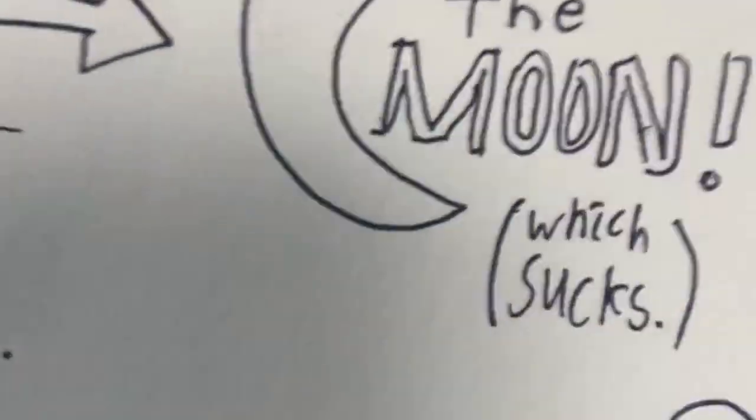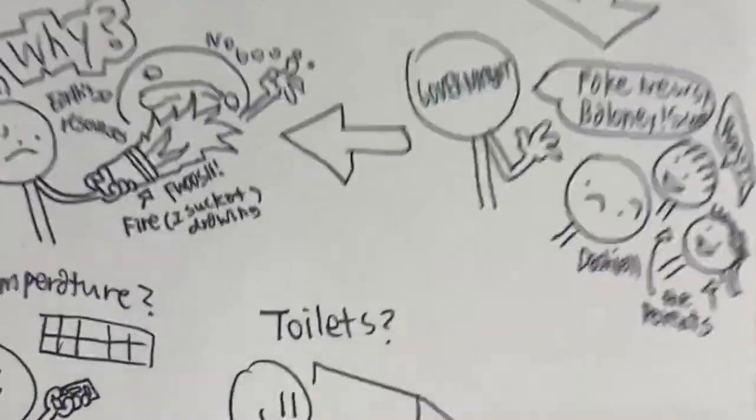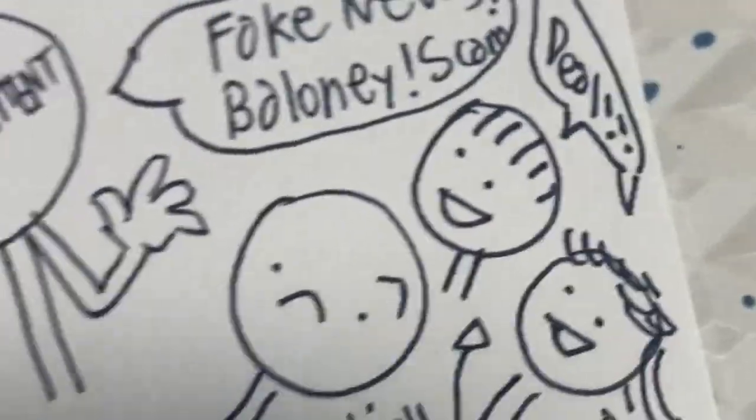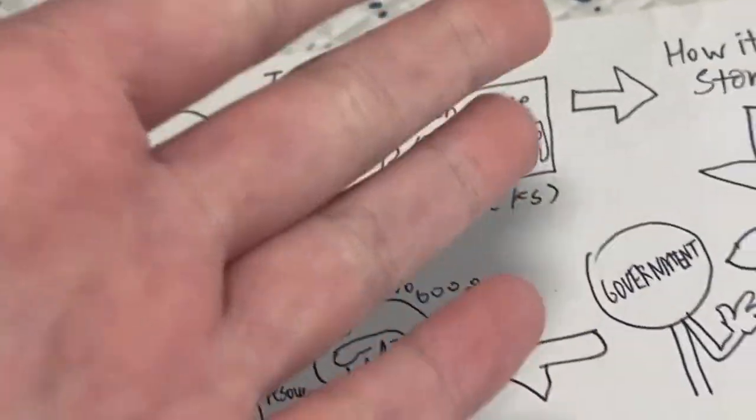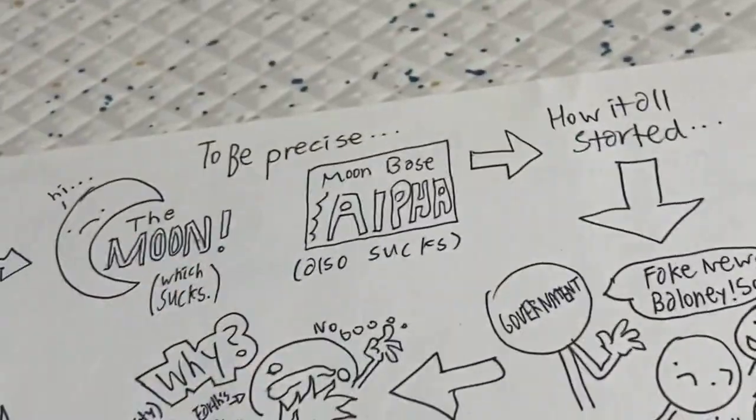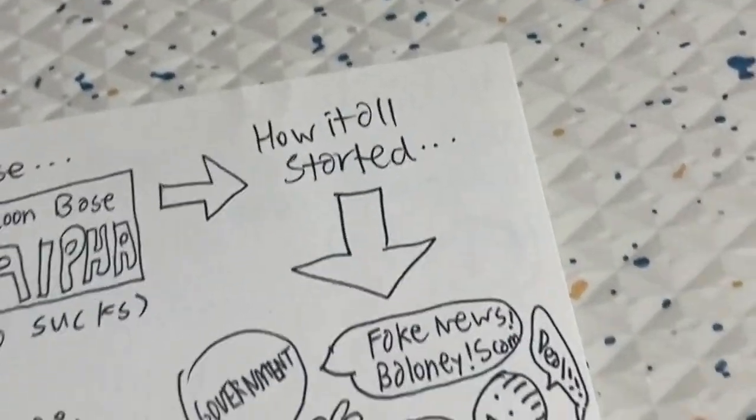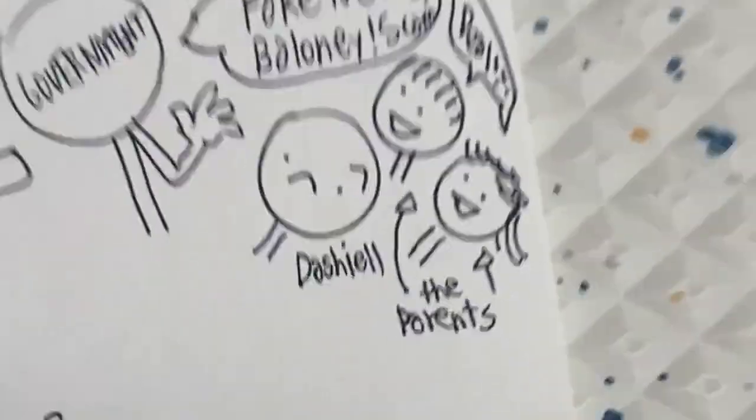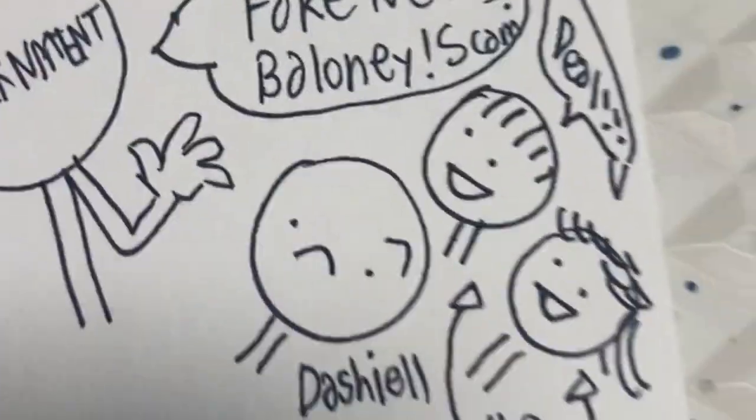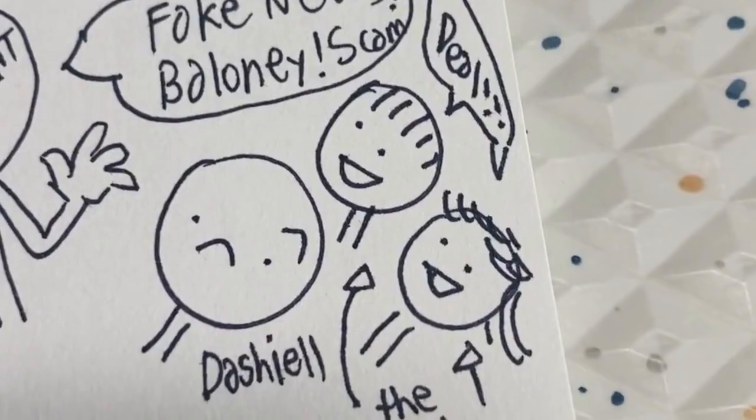How it all started: the government fed Dashiell, his parents, and every other resident on moon base alpha fake news and baloney. They said you'll be the pioneers of moon living, you'll be in history books, and students of the future will have to memorize your names. So they said deal, and so did a lot of other people.